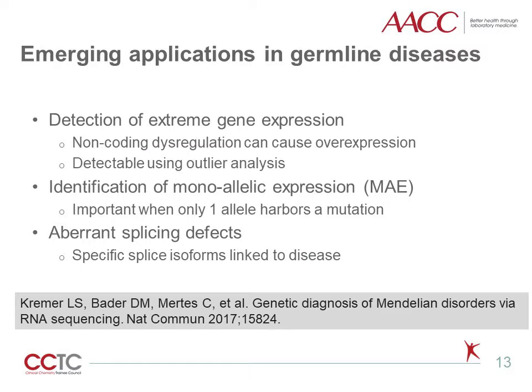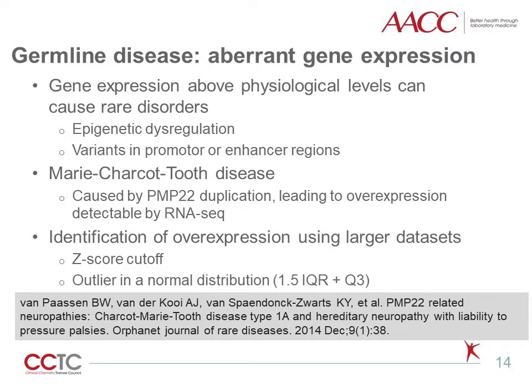In addition to the applications of RNA-Seq in genomic medicine, there are emerging applications for RNA-Seq in diagnosis of rare germline disorders, including the detection of extreme gene expression, identification of monoallelic expression, and aberrant splicing defects. Gene expression above physiological levels can cause rare germline disorders, and unusual gene expression can be caused by epigenetic dysregulation or variants in promoter or enhancer regions. For example, Charcot-Marie-Tooth disease is a rare germline disease caused by duplication of the PMP22 gene. This duplication causes PMP22 overexpression, which is detectable by RNA-Seq.